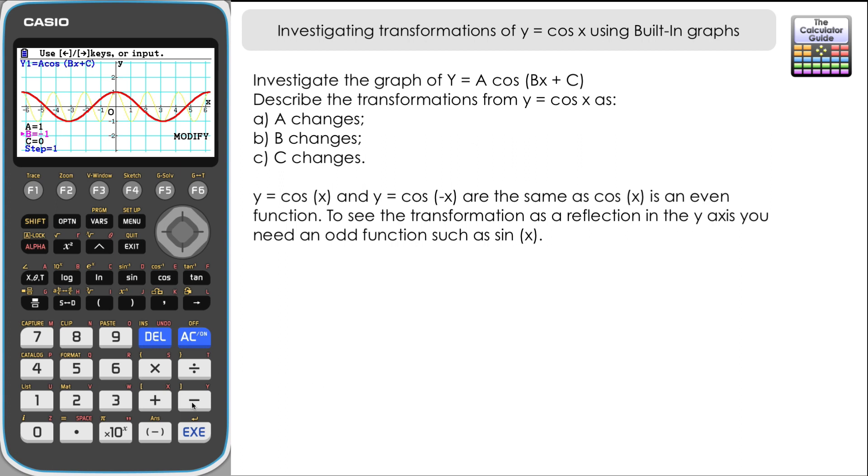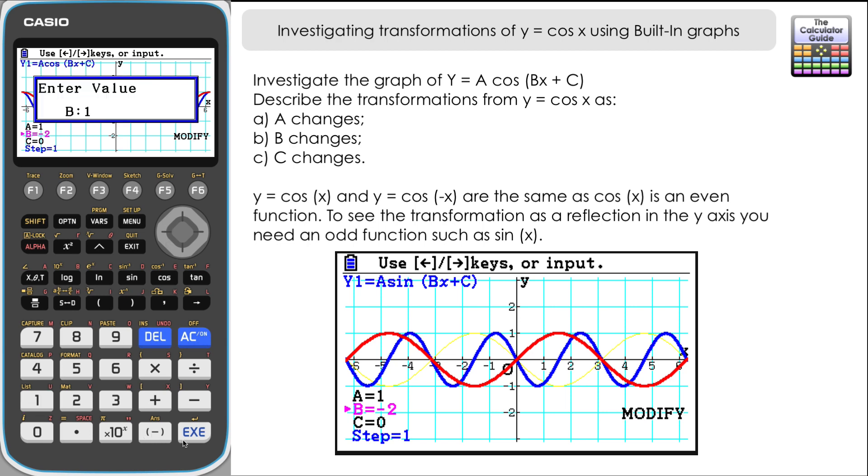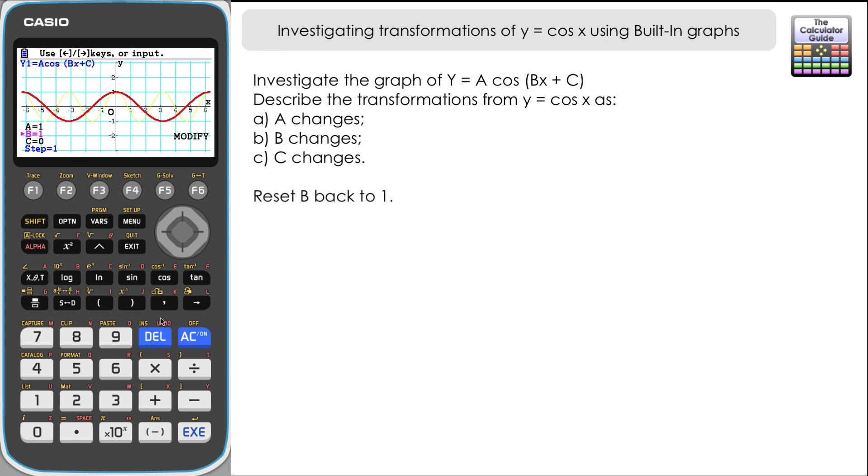However, if this was an odd function such as y equals sine x, you would see a reflection in the y-axis. But we can't see that because we've got an even function with cosine x, and it will be the same when we decrease this to negative 2. And again the reflection isn't obvious, the reflection in the y-axis, it would be with sine not with cosine. But we've still got that stretch going on, twice as many periods displayed, so a scale factor of one half. Maybe you might want to try this with y equals sine x versus y equals sine minus 2x.